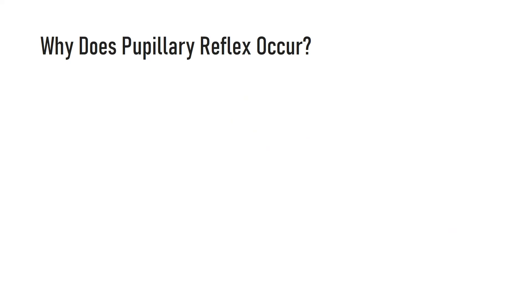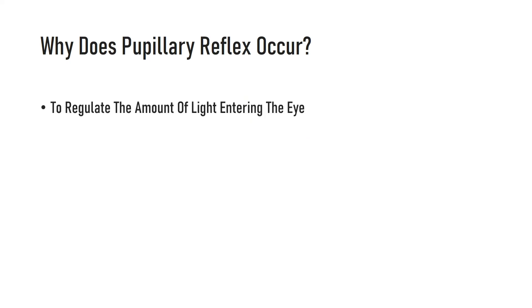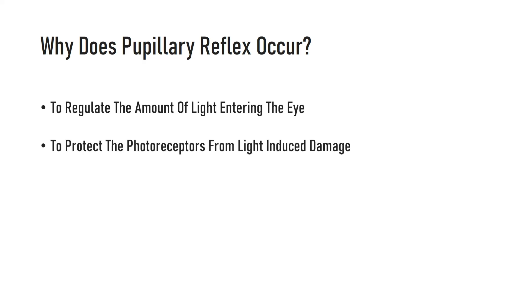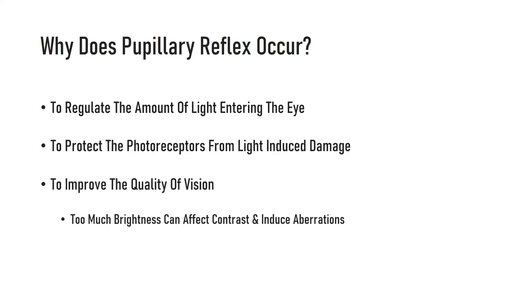The reason pupillary light reflex occurs is to help regulate the amount of light entering the eye, protecting the photoreceptors — rods and cones — from light-induced damage. Pupillary light reflex also helps improve the quality of vision because too much brightness can affect contrast and induce aberrations.